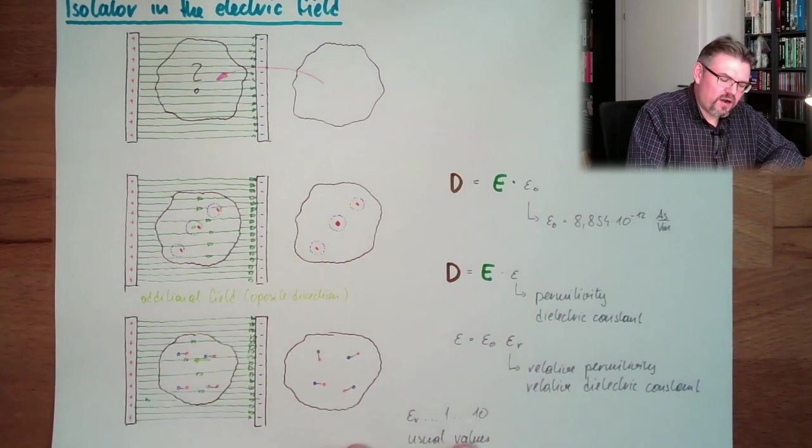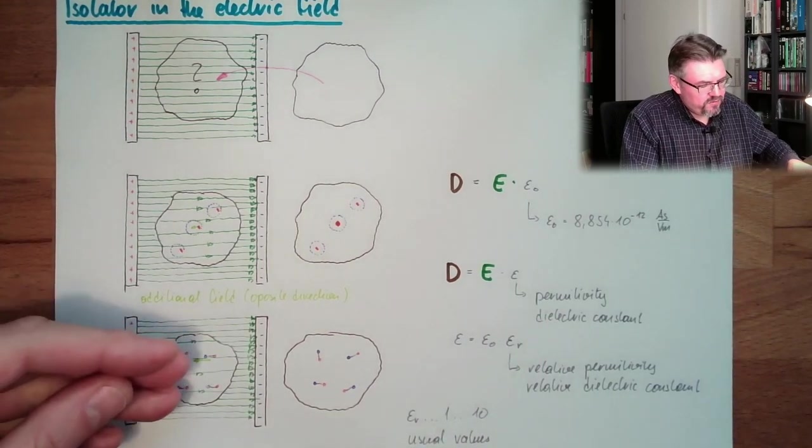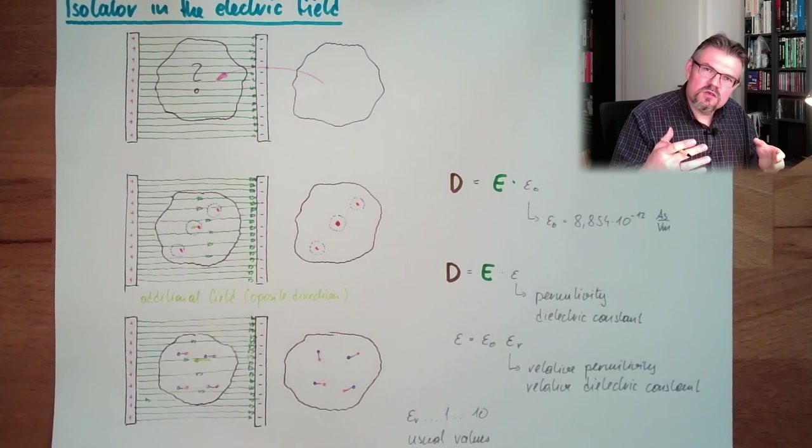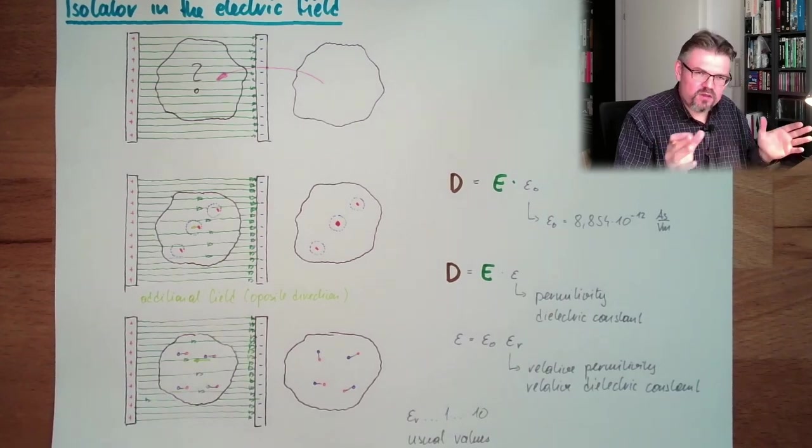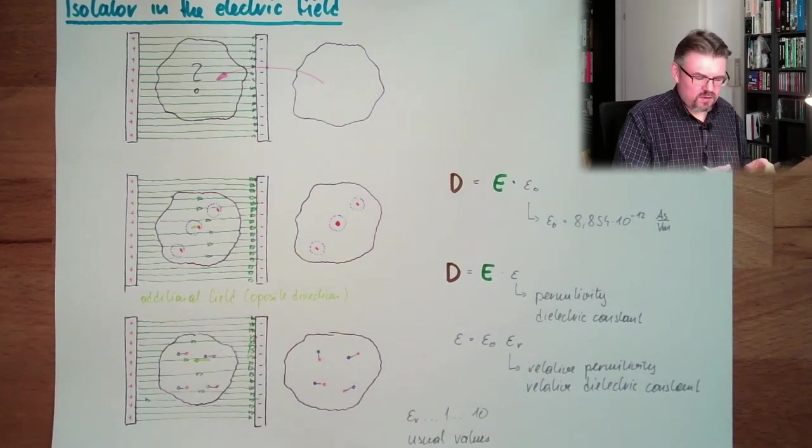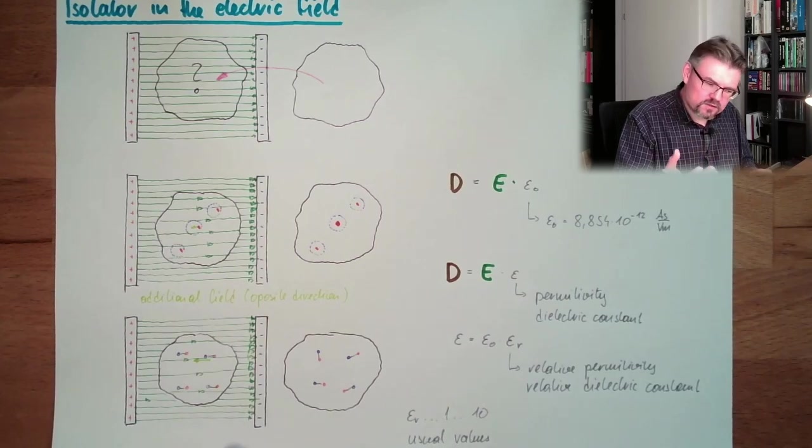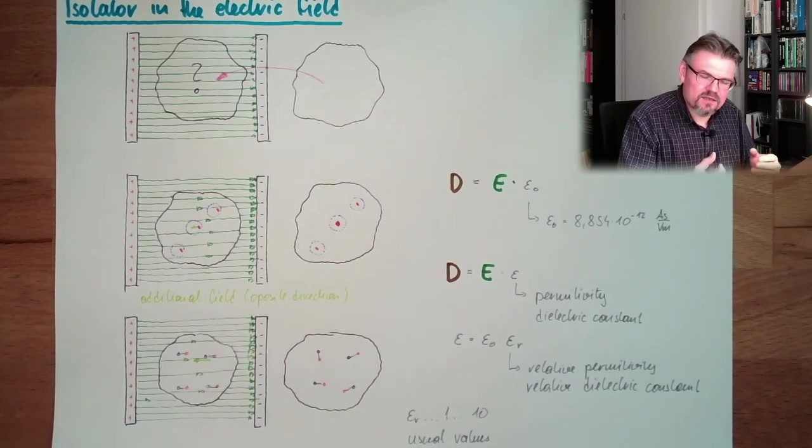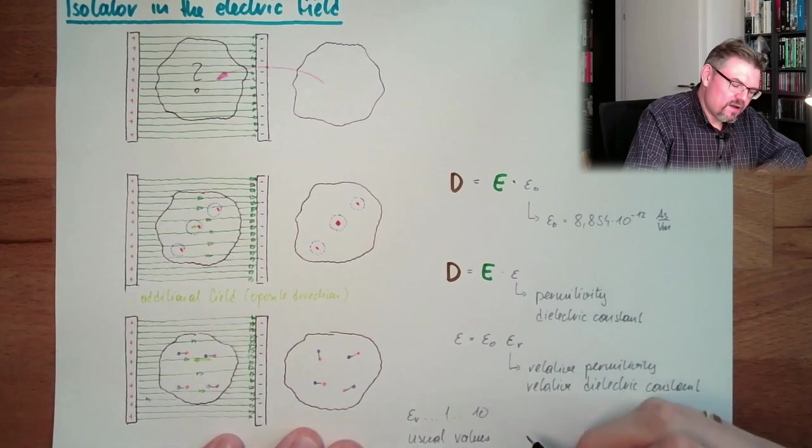So if you have an epsilon r of 2, then the electric field would be 2 times lower than if there would be nothing. It's always bigger than 1, of course. It will not get denser, the electric field.